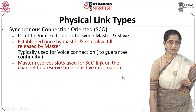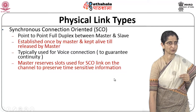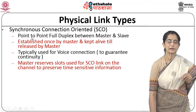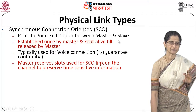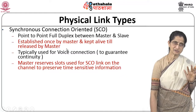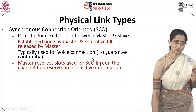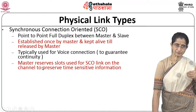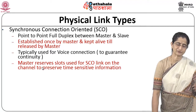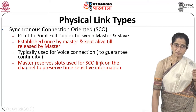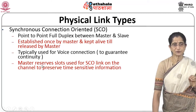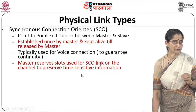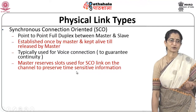At the physical link level, there are two types of links supported in Bluetooth. The first is called a Synchronous Connection-Oriented (SCO) link — a point-to-point, full-duplex connection between master and slave. It is established by the master and kept alive until released by the master. Bluetooth uses time division multiplexing, so the master reserves slots for the SCO link to guarantee timely delivery of time-sensitive information. This is typically used for sending voice, audio, and video.